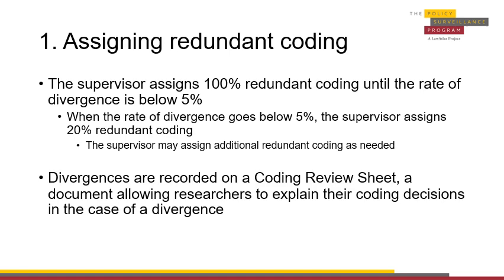For a longitudinal project, redundant research is performed on a set percentage of total iterations for that batch. When the rate of divergence is above 5% and a batch of 10 jurisdictions has an average of 5 iterations per jurisdiction, then all 50 iterations must be redundantly coded. However, if the rate of divergence goes under 5%, then 10 iterations must be redundantly coded.